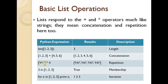For repetition: [1, 2, 3, 4] repeated four times. Then, membership: 3 in [1, 2, 3] — checking if 3 is included — returns True. That is the membership operator. Then for iteration: for x in [1, 2, 3]: print x — this iterates over the list.